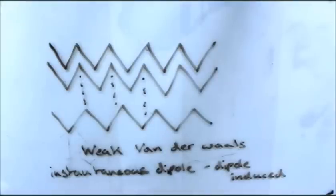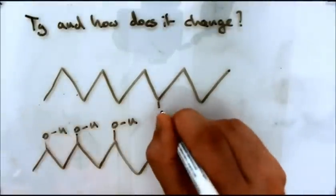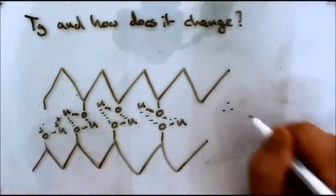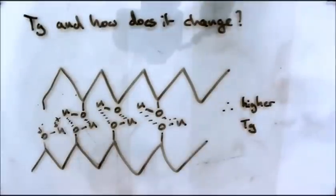However, introducing polar groups into the polymer chain can increase the intermolecular permanent dipole to permanent dipole bonds. This means that the chains have a stronger attraction between them, making the polymer stronger. There are also other ways to change the properties of polymers.